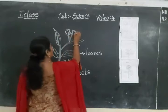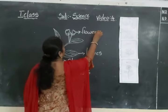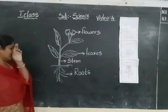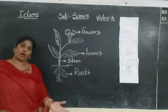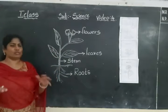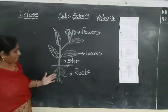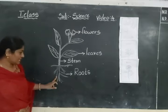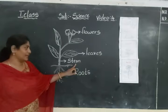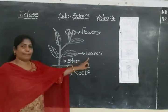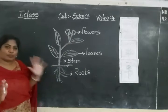These are flowers. What are these, children? These are flowers. These are the parts of a plant: roots, stem, leaves, and flowers. You can see the roots of a plant.